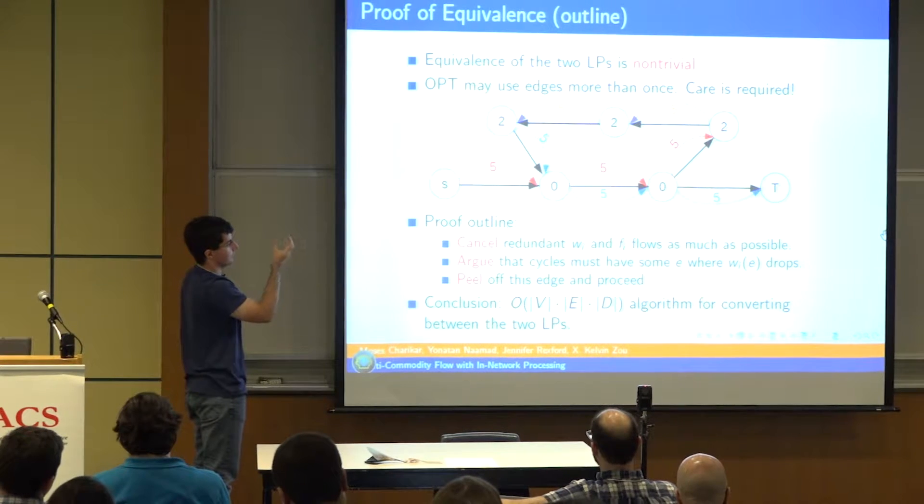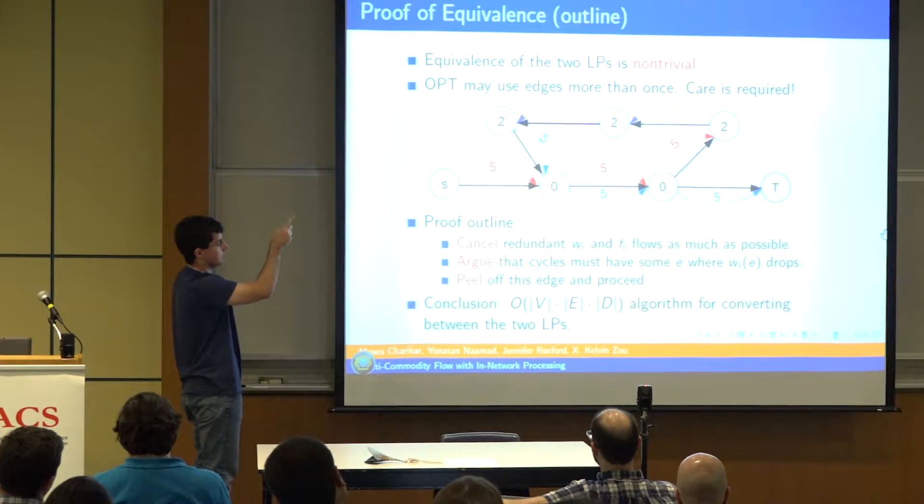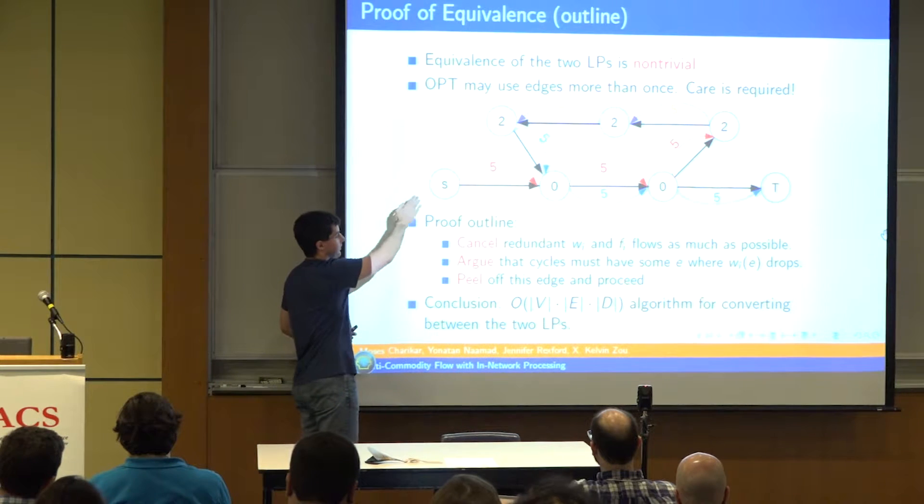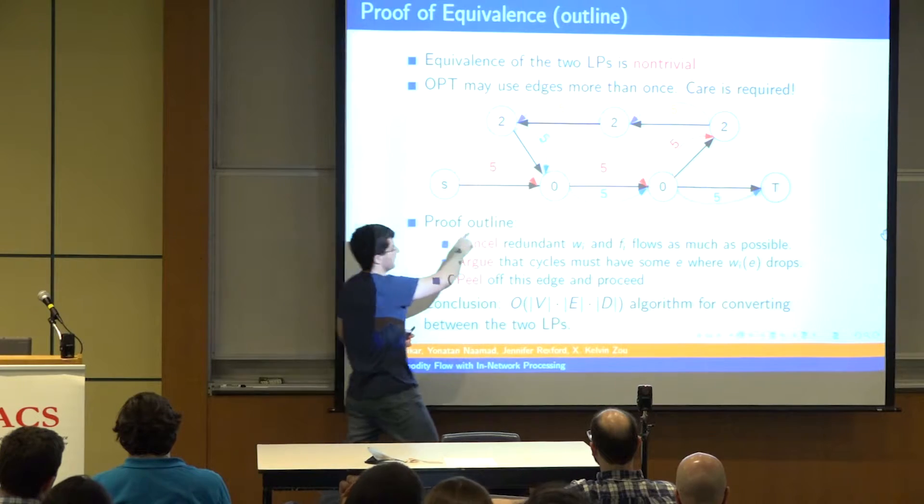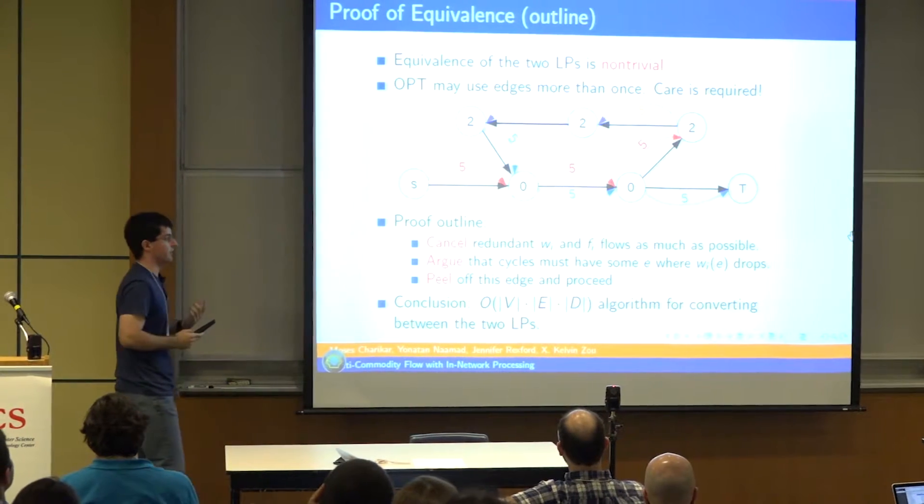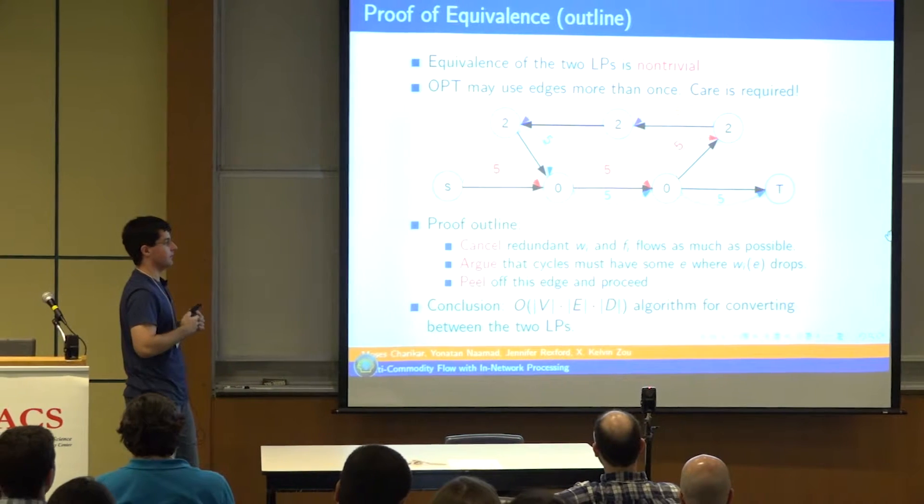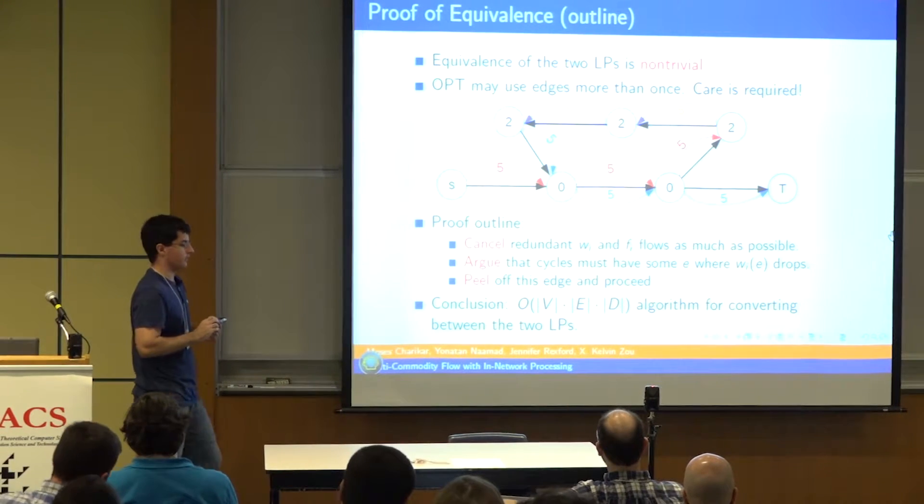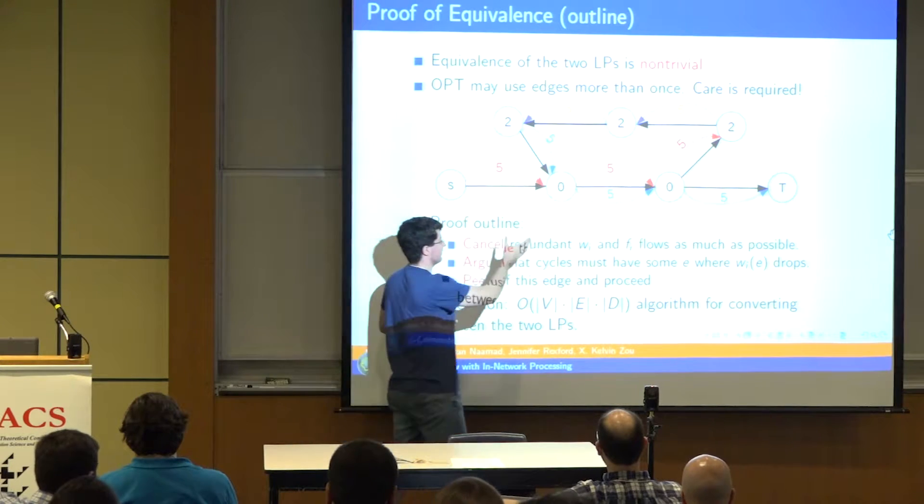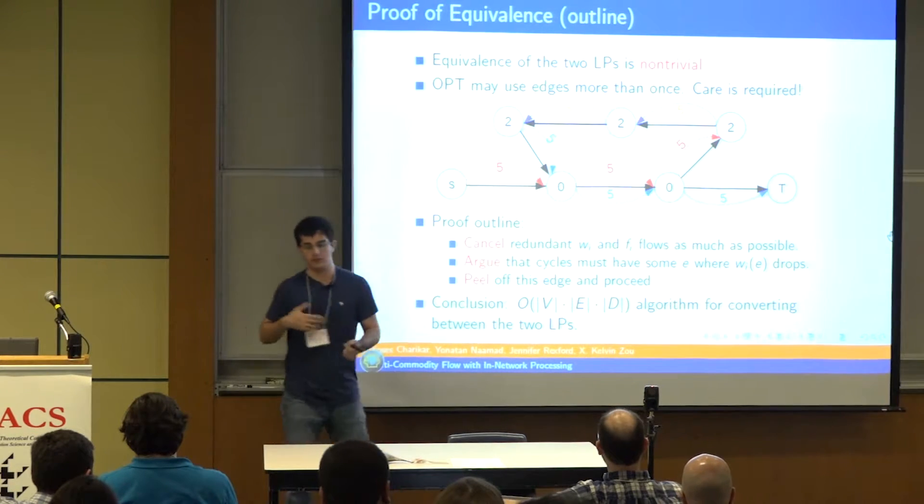If you ignore the colored edges for now and assume each black edge has capacity 10, whereas each node has processing capacity equal to what's written within it, it's easy to verify that the only way to get any processed flow from s to t actually requires using this bottom edge twice. And so even though that bottom edge has capacity 10, we only end up being able to send five units of flow across, or five units of processed flow across from s to t because we have to split it in half for each of the two uses.